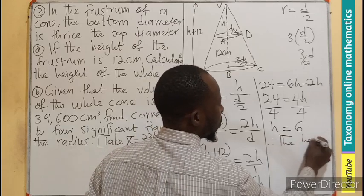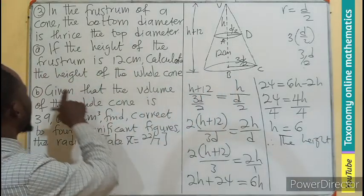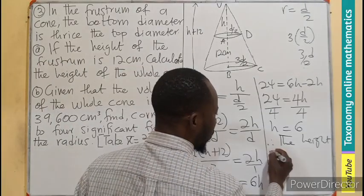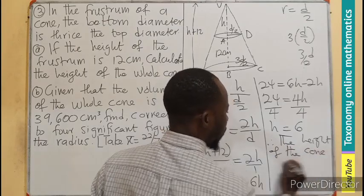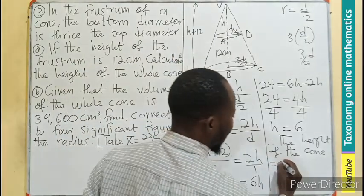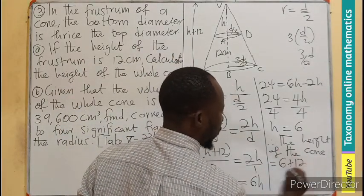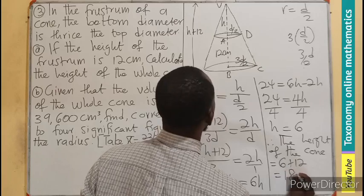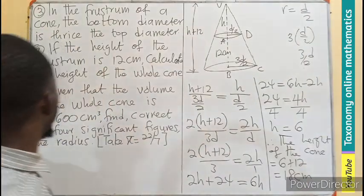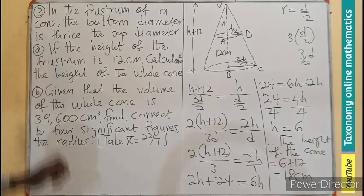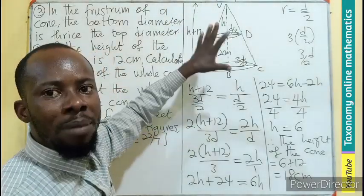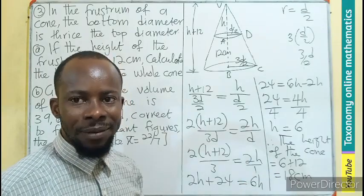Therefore, the height of the cone is going to be H plus 12, which we have labeled as 6 plus 12, and that gives us 18 centimeters. The first part asked us to find the height of the whole cone, which is the smaller cone and the frustum height combined together. That gives us 18.